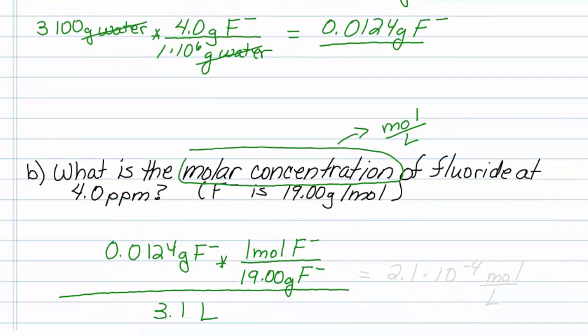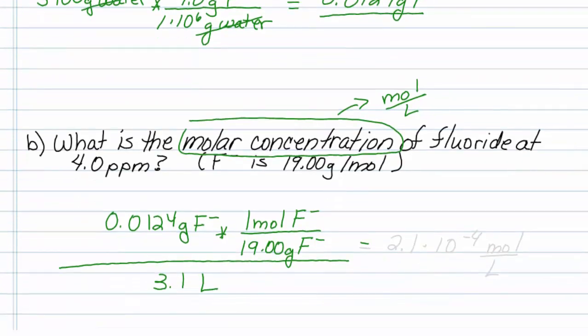3.1 liters of water. So if I do that math, the concentration will come out 2.1 times 10 to the minus 4 moles per liter, also known as molar.